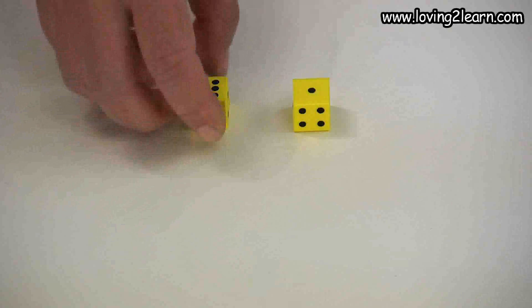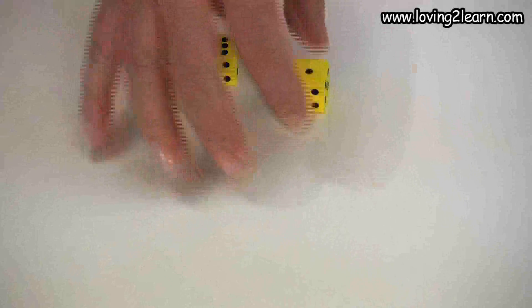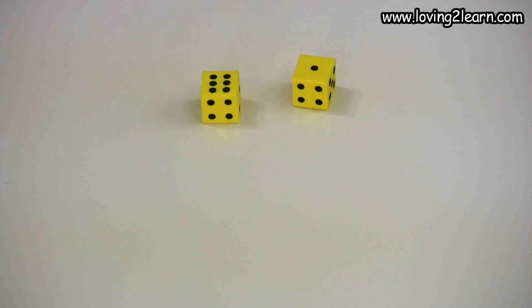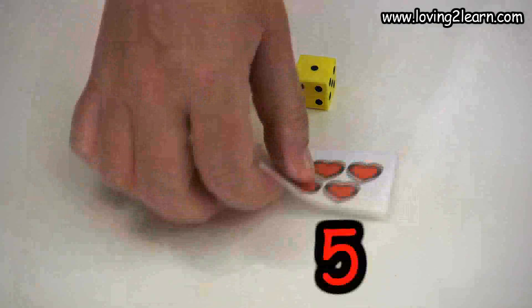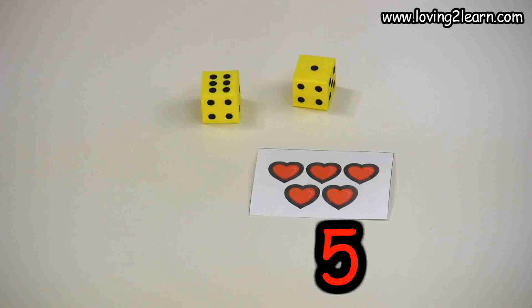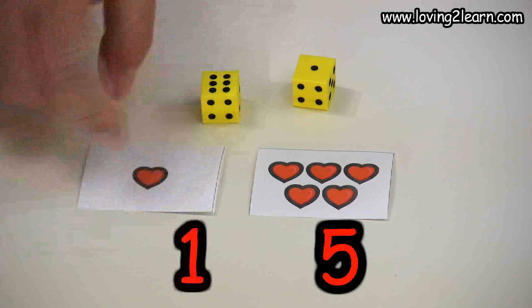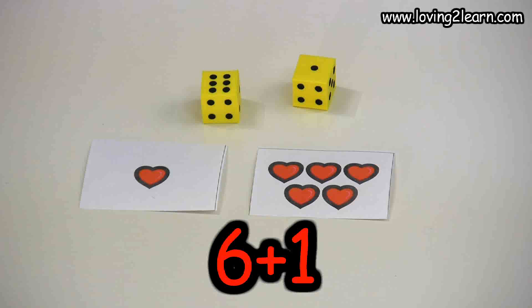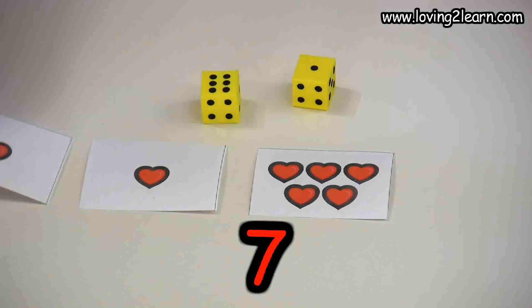I have to come up with combinations that equal seven. Starting out, I'm going to do five and one, which equals six, and one more, which equals seven.